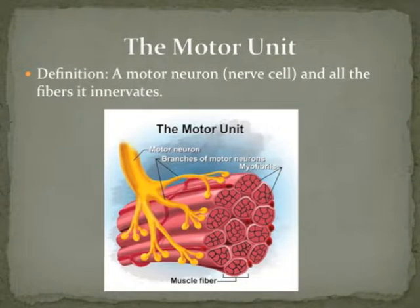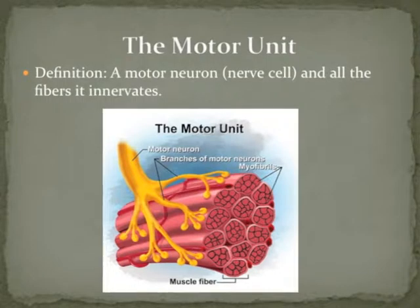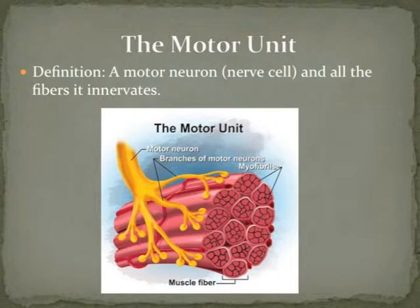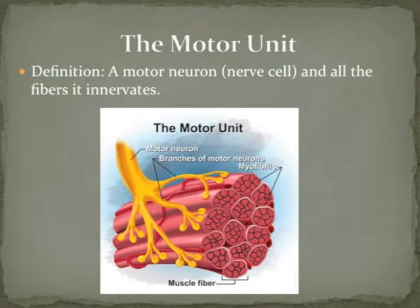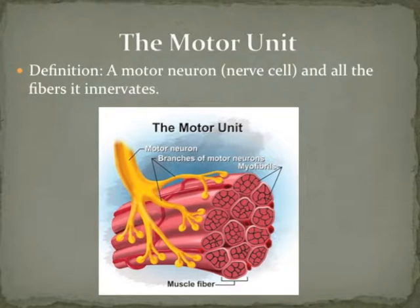When we're doing resistance training, we are providing a stimulus to the muscle. We have a resistance, we have weights in our hands. Our brain sends a signal through the central nervous system to the muscles for the muscles to contract. In this central nervous system there's the motor neuron, and it connects to the fibers on the muscle. The motor neuron and all the fibers it innervates is the motor unit.